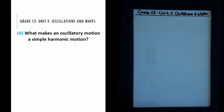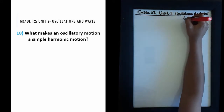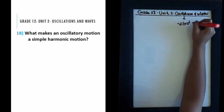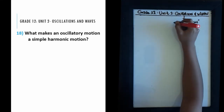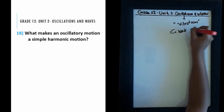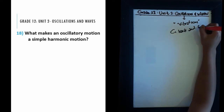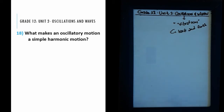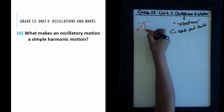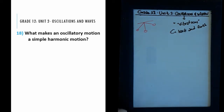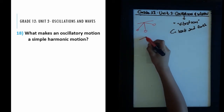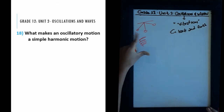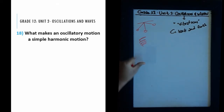An oscillatory motion, or generally oscillations, means vibrations — back and forth motion. A pendulum which moves back and forth between its different points is an example of an oscillatory motion. A spring that's compressed and then released will also move in a back and forth vibration, also known as an oscillatory motion.